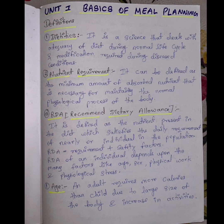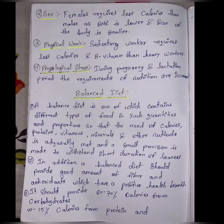RDA equals requirement plus safety factors. RDA of an individual depends upon many factors like age, sex, physical work, and physiological stress. Age: an adult requires more calories than a child due to large body size and increased activities. Sex: females require less calories than males as BMR is lower and body size is smaller, while males have greater body height and muscle mass, giving them a higher BMR.